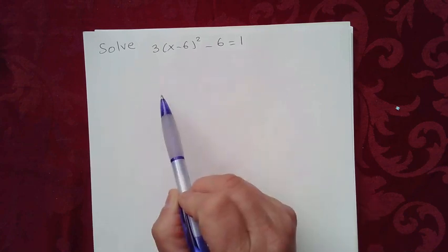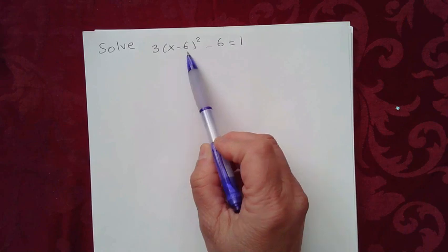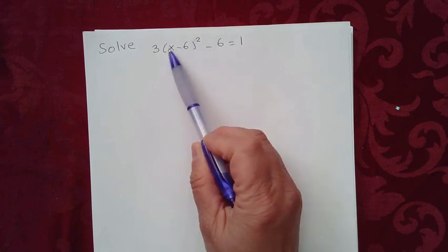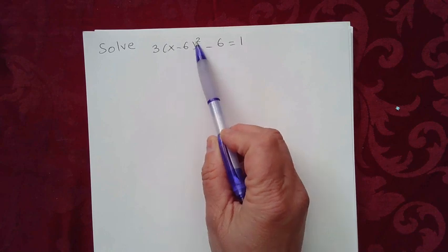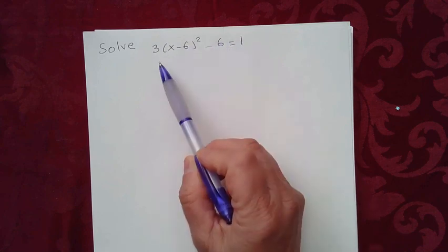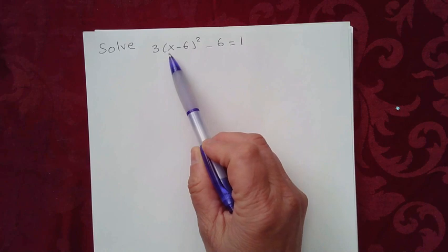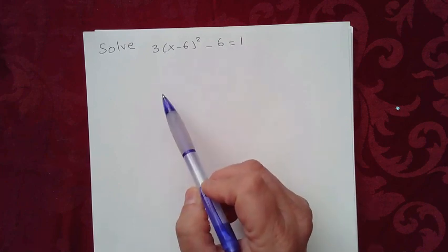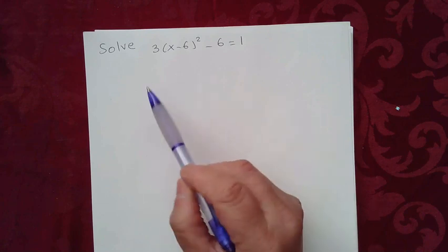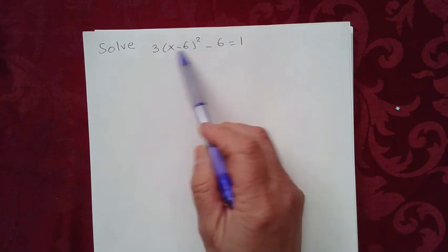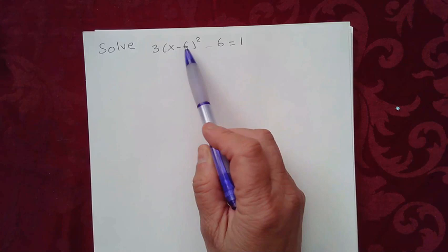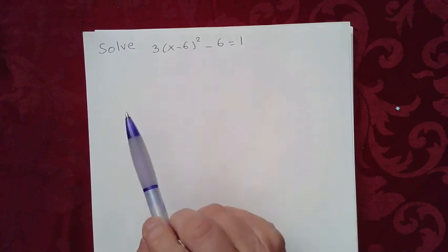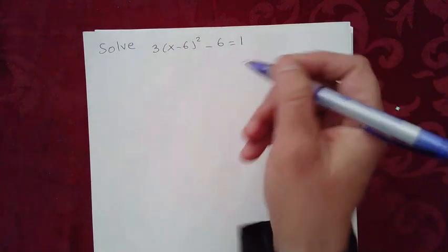Here we have a quadratic equation because we have a binomial raised to the second power. If we were to expand this, we're going to get x squared. So this is a quadratic equation — you can expand this and try to factor it, use the quadratic formula, or any method you want. However, looking at this equation, you'll notice you have a binomial squared, so it might be a good idea to use the square root property.